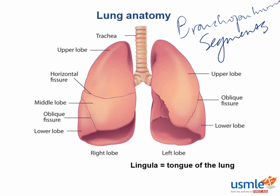The trachea divides into the left and right main stem bronchi. The boards like testing your knowledge that the right main stem bronchus takes off at a more vertical angle compared to the left. This affects intubations and aspirations: if an endotracheal tube advances too deeply, it is more likely to go into the right main stem bronchus. Foreign body aspirations are also much more likely to be found in the right lung, specifically the lower lobe if the patient is upright. When a patient is lying supine, aspirations tend to go to the posterior segment of the right upper lobe, because of gravity.